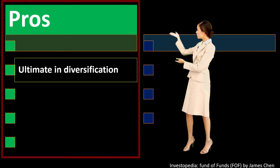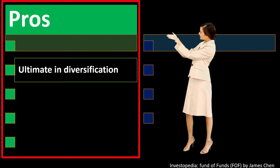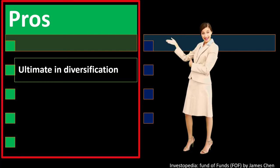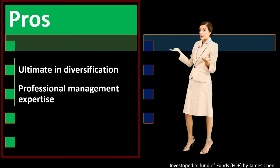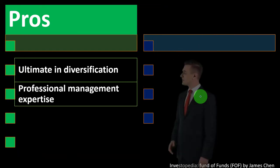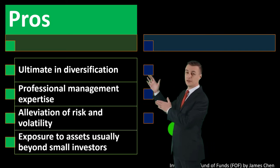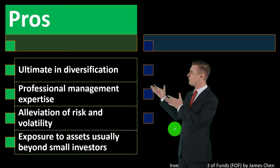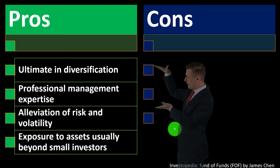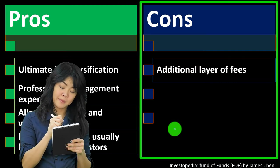The pros of a Fund of Funds: you have the ultimate in diversification, because you have funds compiling other different funds, and those other funds hold different underlying securities — a huge goal we're typically looking for. You also get professional management expertise, alleviation of risk and volatility, and exposure to assets usually beyond the reach of small investors.